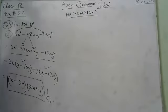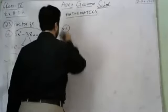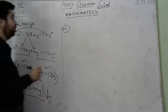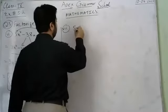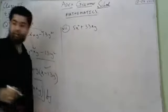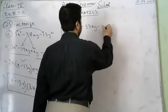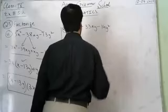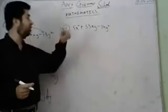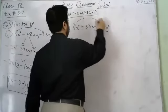Now for part 7: the expression is 5x² plus 33xy minus 14y². Nothing is common here, so we proceed with mid-term breaking.